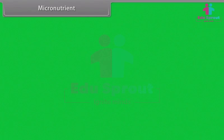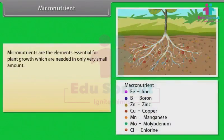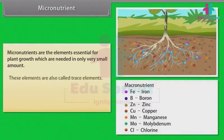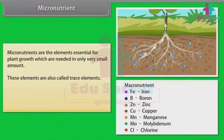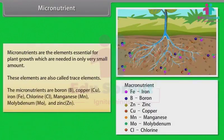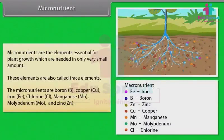Micronutrients are elements essential for plant growth which are needed in only very small amounts. These elements are also called trace elements. The micronutrients are boron, copper, iron, chlorine, manganese, molybdenum, and zinc.